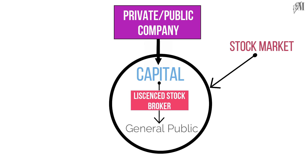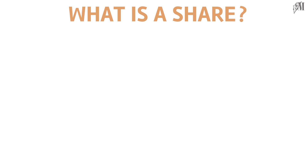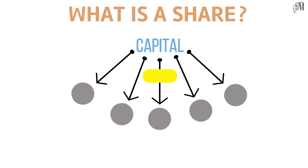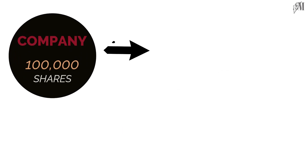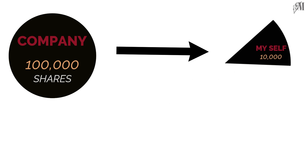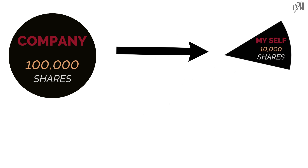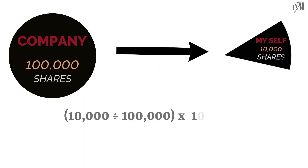Now let's look at what a share is. A share is one of the equal parts into which a company's capital is divided. For example, if a company has 100,000 shares and I buy 10,000 of them, my ownership is found by dividing 10,000 by 100,000 and multiplying by 100%, which gives me 10%.